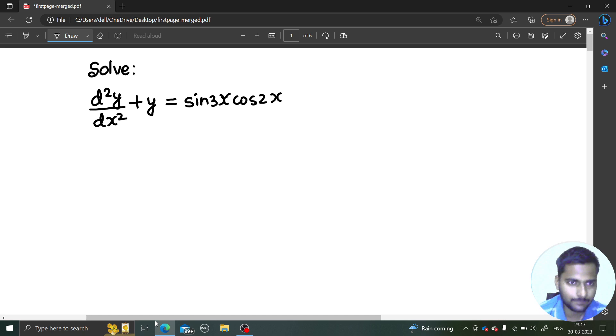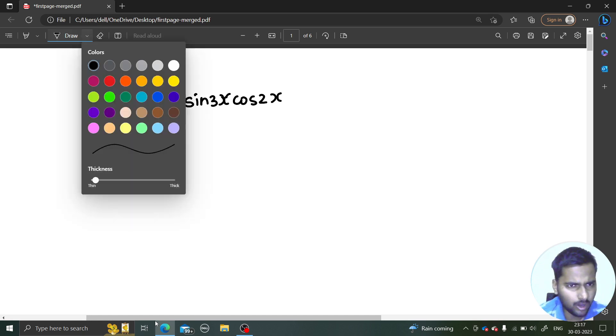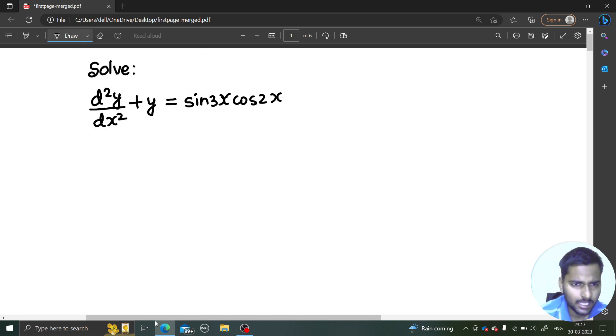Looking at the problem, first thing always what we have to do is write this in terms of capital D. You know d by dx, d by ds is equivalent to D. So this can now be reduced to (D² + 1) operating on y is sin(3x)cos(2x).